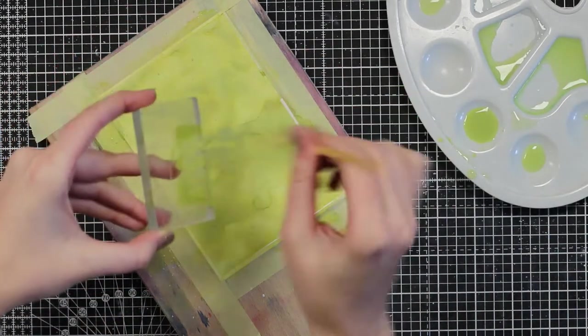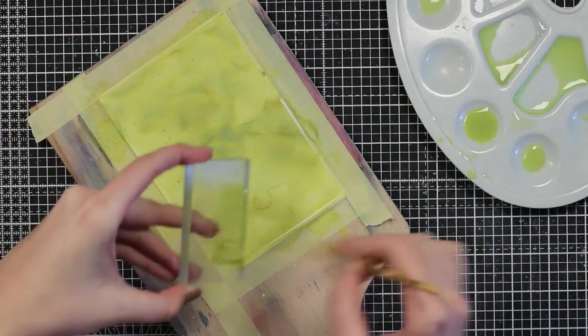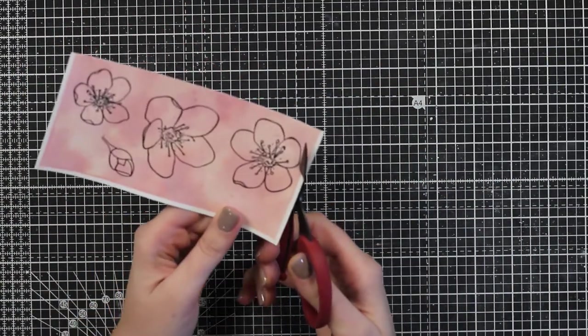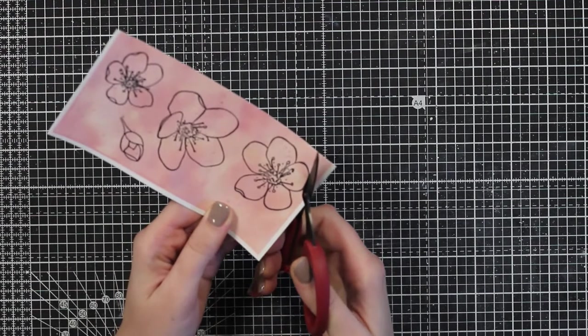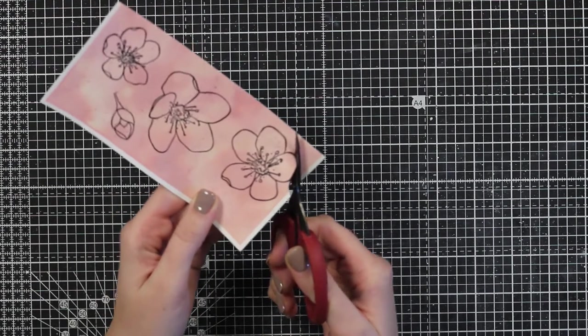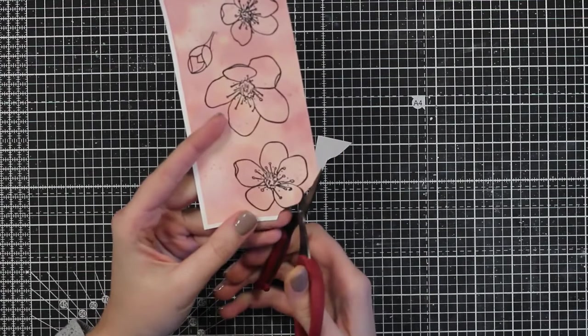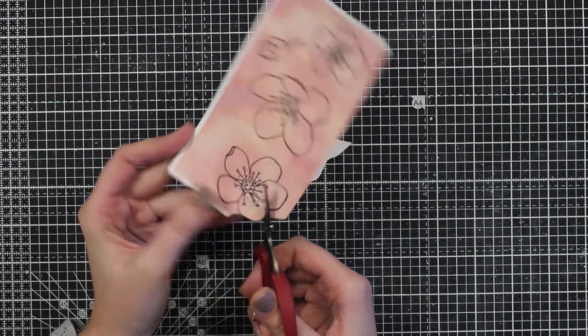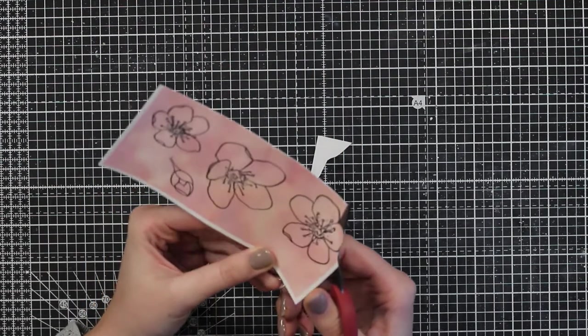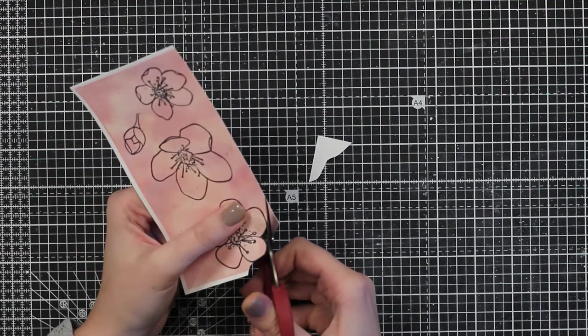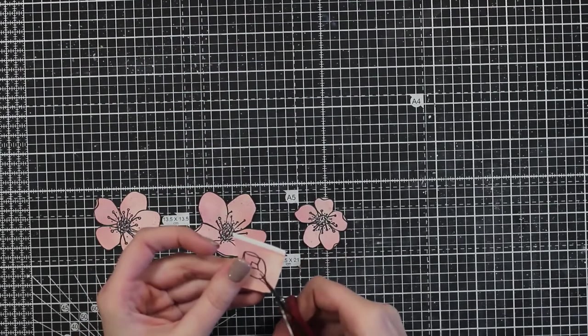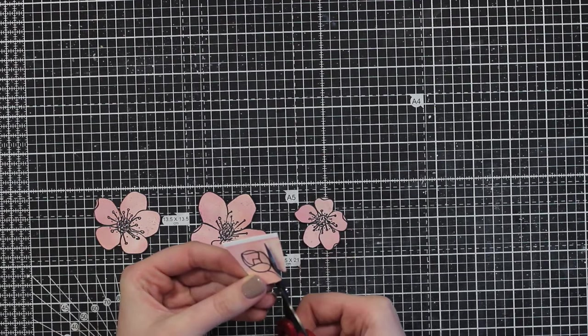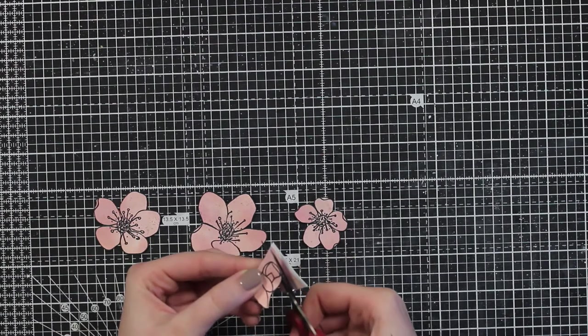Then I will go ahead and fussy cut the flowers out. You could use the coordinating dies—I have them, but here I just want to make sure that I actually have the pink only on the flowers, and this means I had to go in and fussy cut it. This is actually the only time-consuming part of this card, but it's totally worth it.